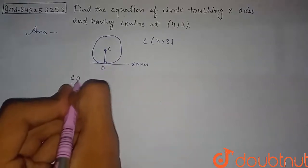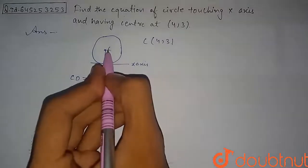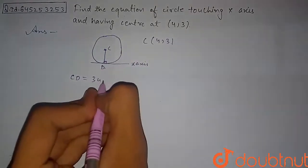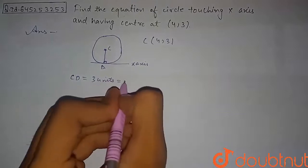So we can say that the CD distance will be equal to y-coordinate of the center, that will be equal to 3 units, and we can say that this will be equal to radius.